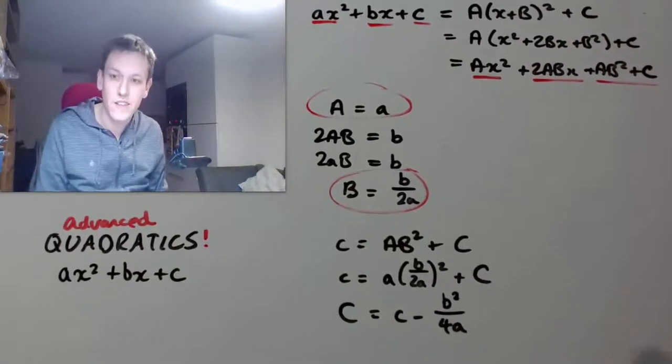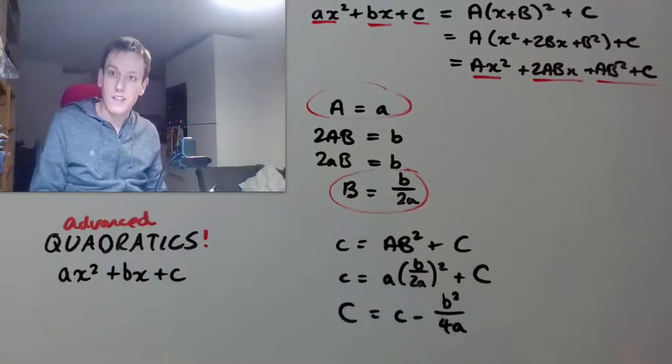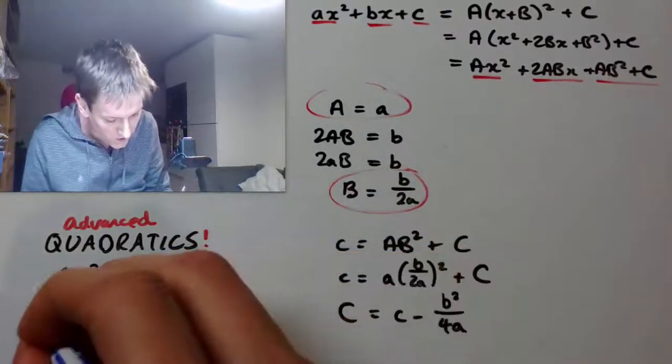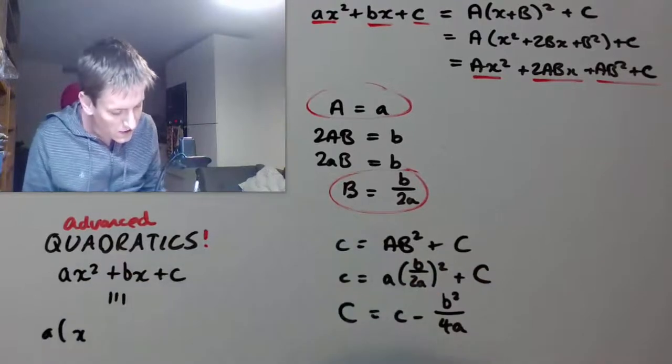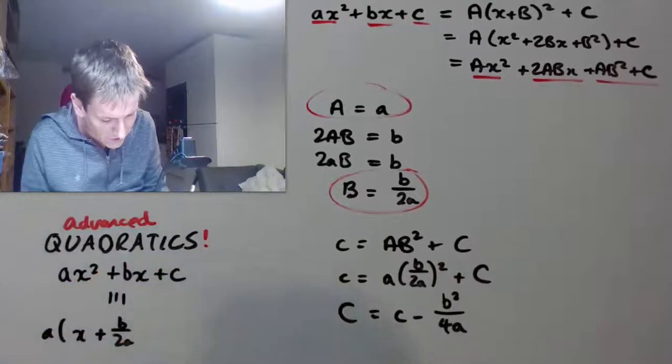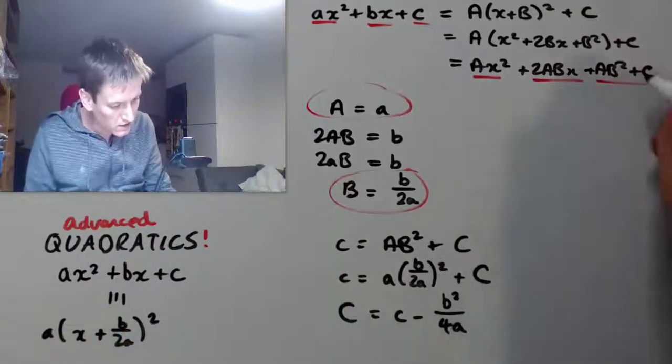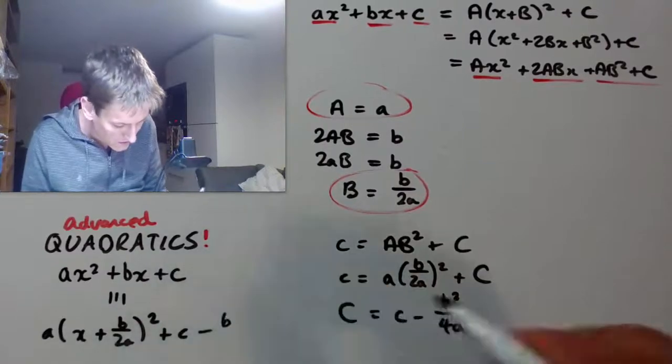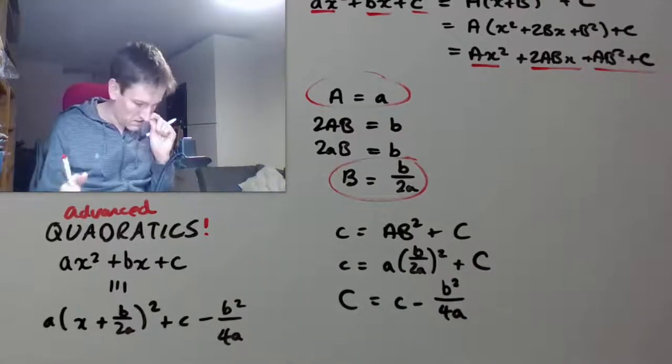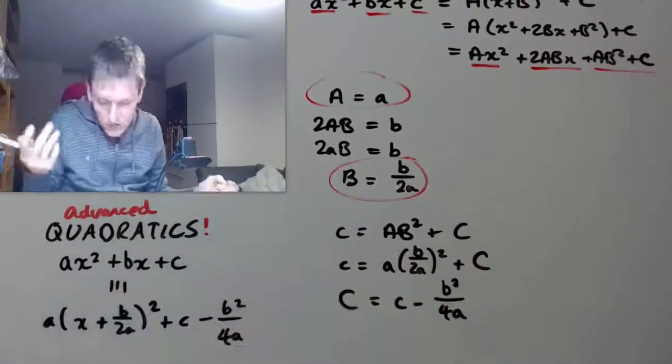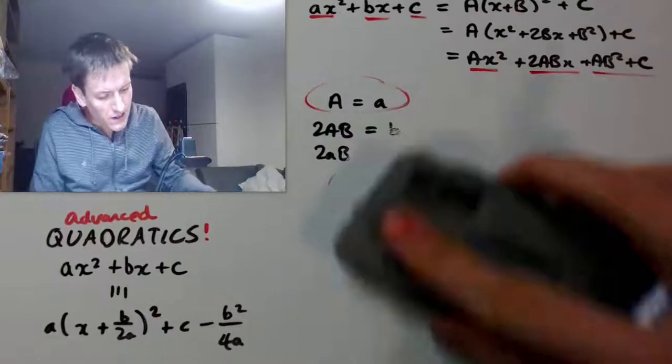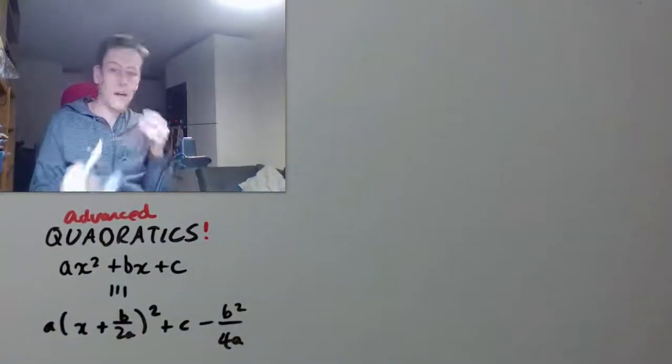So what I've shown here then is that this quadratic here is the same thing. It's identically equal to this completed square form a times x plus b divided by 2a all squared plus c minus b squared over 4a. Okay, so these are all small letters now. Right, so given this quadratic, I can always write it in this completed square form. And in some ways this tells us more or less everything we need to know about quadratics. Completed square form is very powerful.